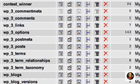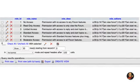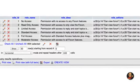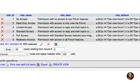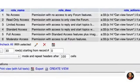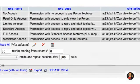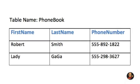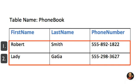MySQL databases contain tables, and within a table there may be records, or in other words rows. Similar to an Excel spreadsheet or Word document, you may have a table called phone book and within the table you may have 3 columns that say first name, last name, and phone number.